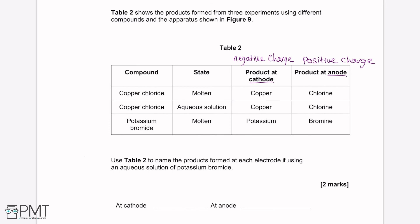Table 2 shows products formed from three experiments: molten copper chloride, aqueous copper chloride, and potassium bromide. The cathode (negative) attracts positive ions; the anode (positive) attracts negative ions. The question asks to name products at each electrode for an aqueous solution of potassium bromide. In aqueous solution there are H+, OH−, K+, and Br− ions. At the cathode we choose between hydrogen and potassium — the rule is that the metal is produced if it is less reactive than hydrogen; otherwise hydrogen is produced.